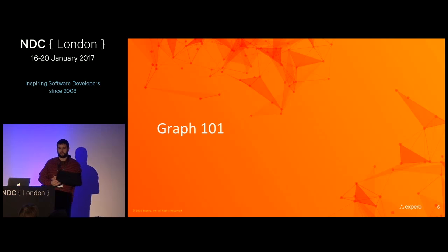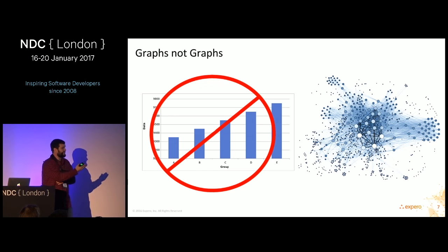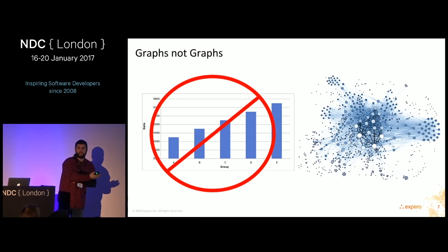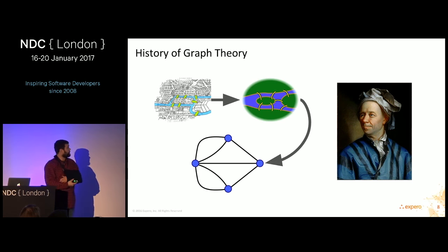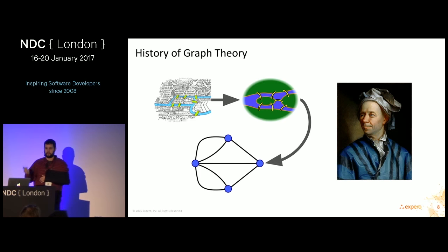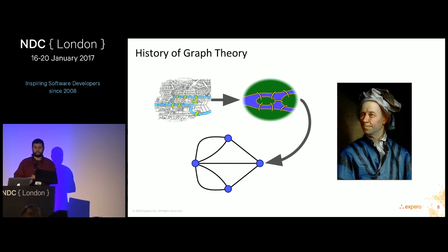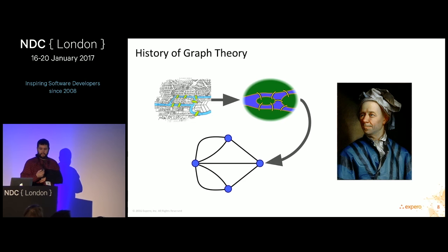First we're going to walk through what I like to call Graph 101. We're not talking about bar charts or line charts — we're talking about interconnected webs of data. Have any of you heard of the Seven Bridges of Königsberg problem? This was a famous problem developed by Leonard Euler in 1736, a Swiss mathematician.